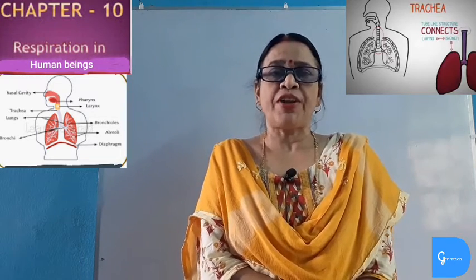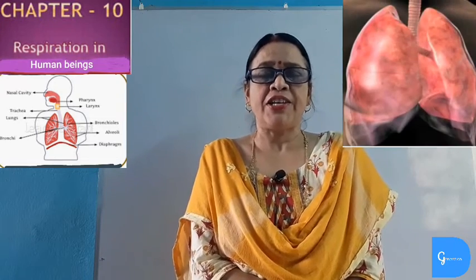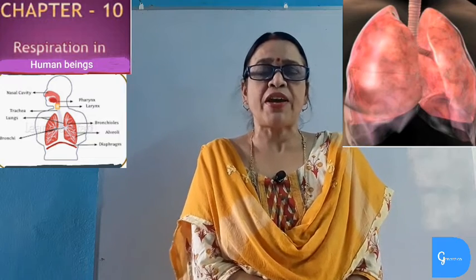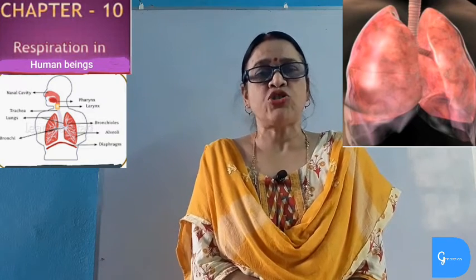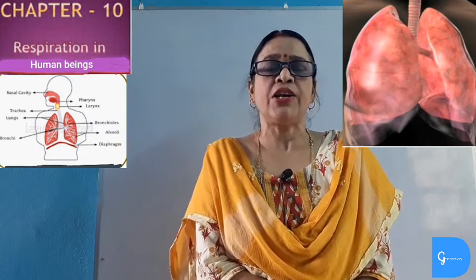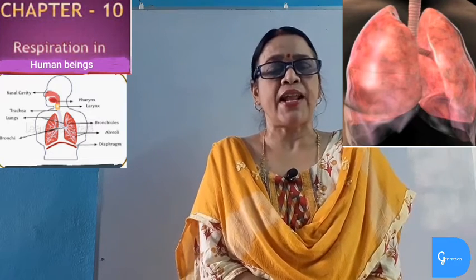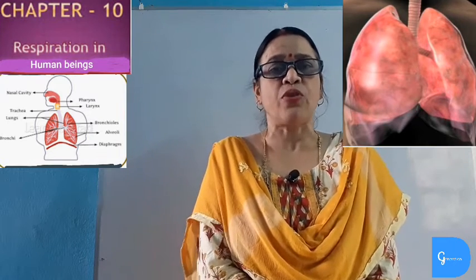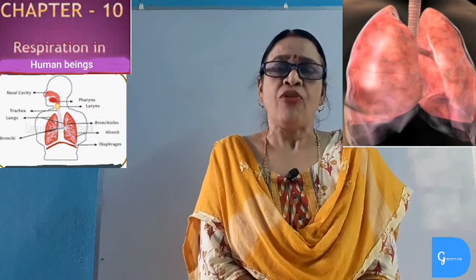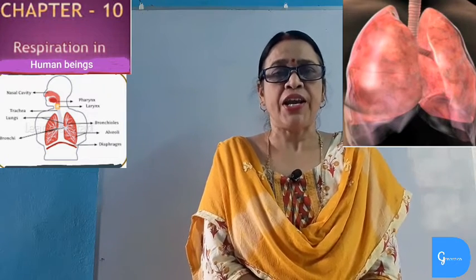Then come the lungs, or pulmonary sacs. There are two balloon-like structures on either side of the heart, present in the thoracic cavity, called lungs. The lungs are covered by a membrane known as the pleura, divided into two layers: the outer parietal pleura and the inner visceral pleura. The right lung is bigger than the left lung. The right lung is divided into three lobes — right superior, right middle, and right inferior — whereas the left lung is divided into two lobes: left superior and left inferior.